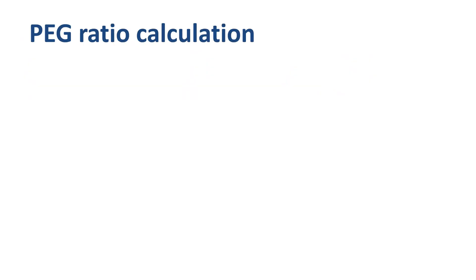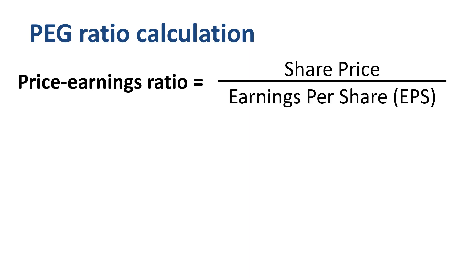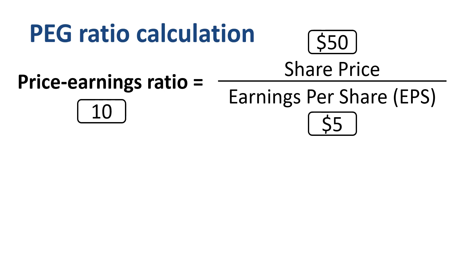In order to calculate the PEG ratio, we start off with calculating the P/E ratio. The P/E ratio is calculated by dividing a company's share price by an accounting metric called earnings per share. PE ratios are commonly quoted and widely used. For a company with a $50 share price and $5 EPS, the price-earnings ratio is 10. The price-earnings ratio shows how much investors are willing to pay per dollar of earnings.